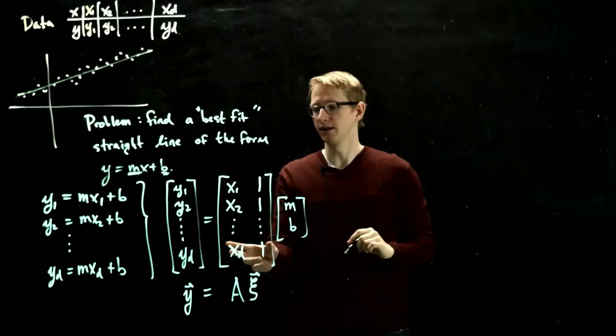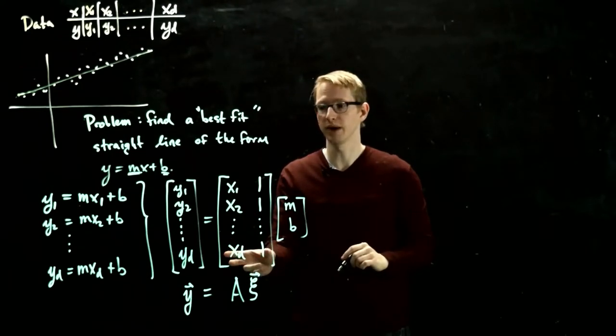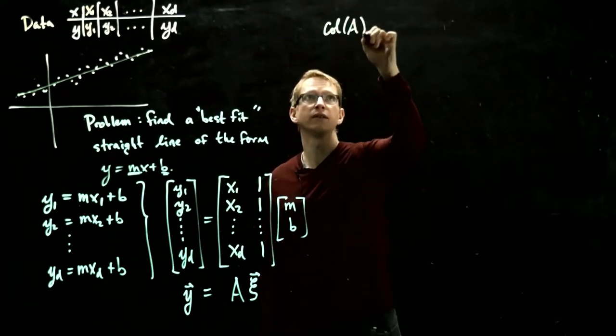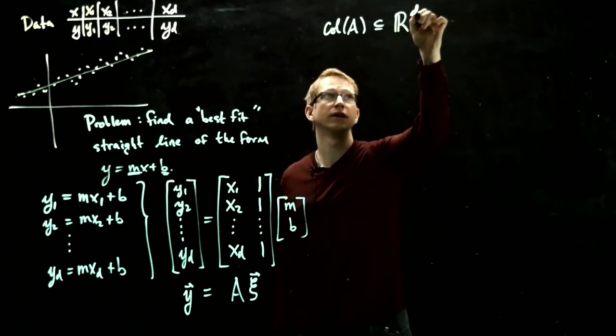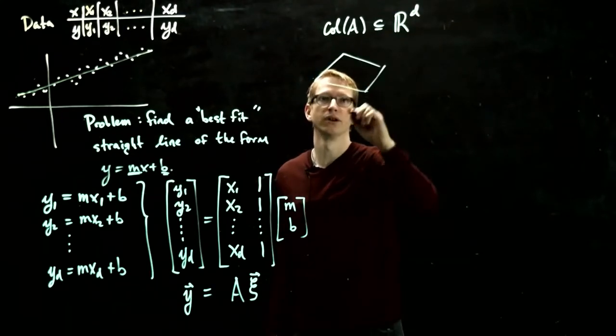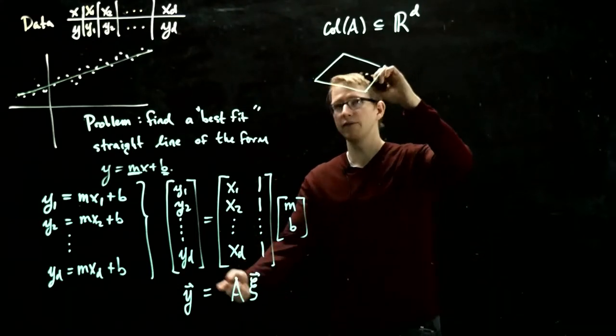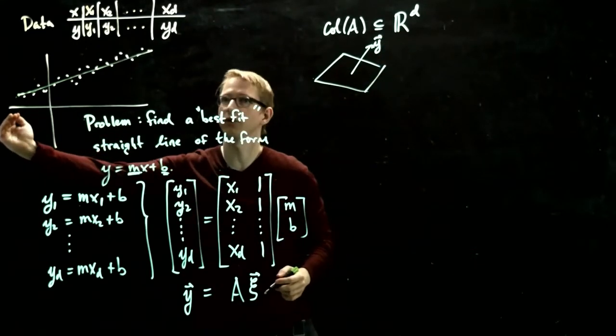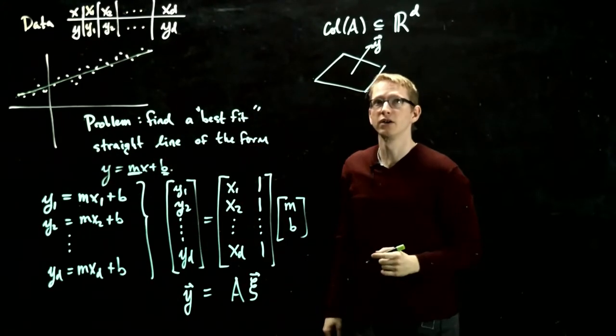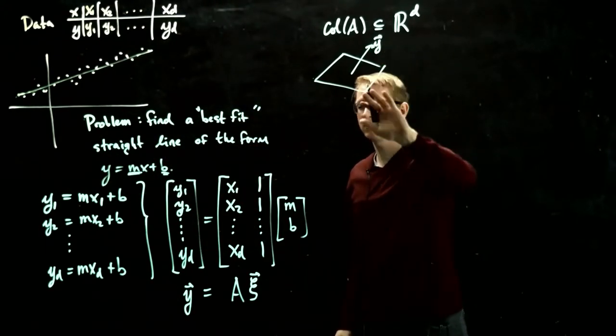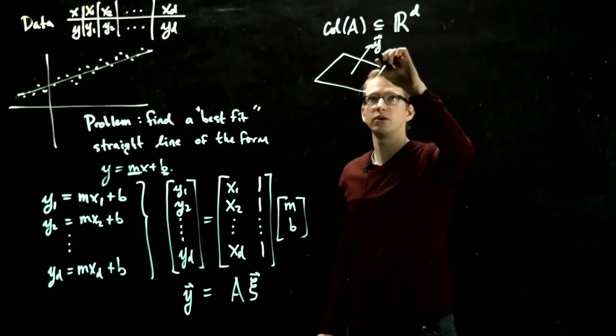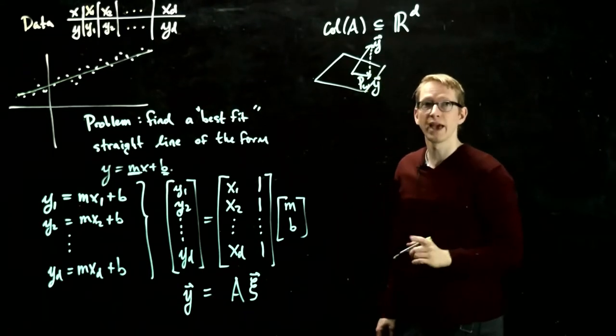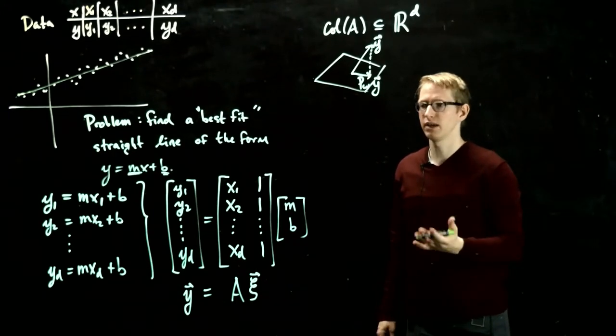Now in this case, the column space of A happens to be a two-dimensional subspace of Rd. So the column space of A is a two-dimensional subspace of Rd, so we can actually draw something like this, although the space it's in might be significantly larger. And we have the vector y somewhere out here. In general, it's not in the column space. In general, this line does not go through every single one of these data points. So we have some vector y, and instead of trying to solve this specific equation, which in general is unsolvable, we can project y onto this subspace w. And we can solve that associated system, and then we'll say what that means in a moment.